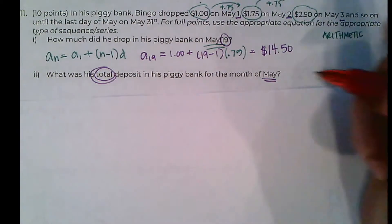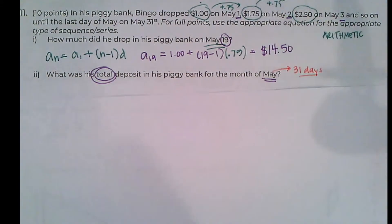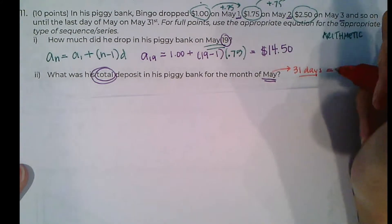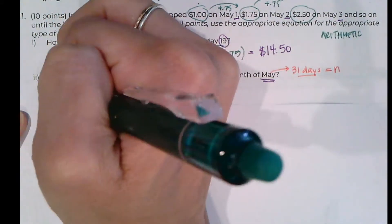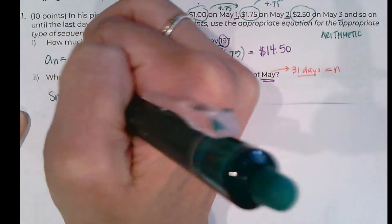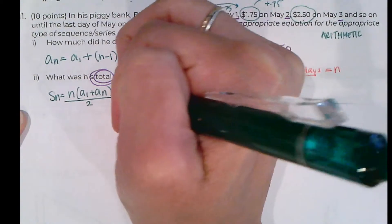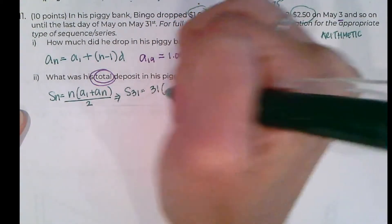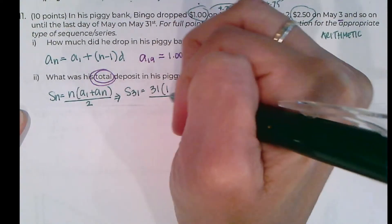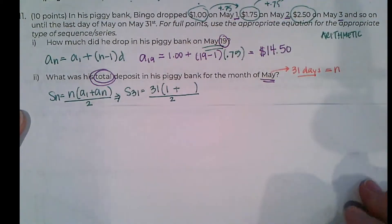May has 31 days. So that's going to be our N. And we're looking for a total, so I know I'm going to use the S_N formula. So S_N is equal to N(A_1 plus A_N) all over 2. We're going to do this for 31, which means we'll have 31 times the first day is $1.